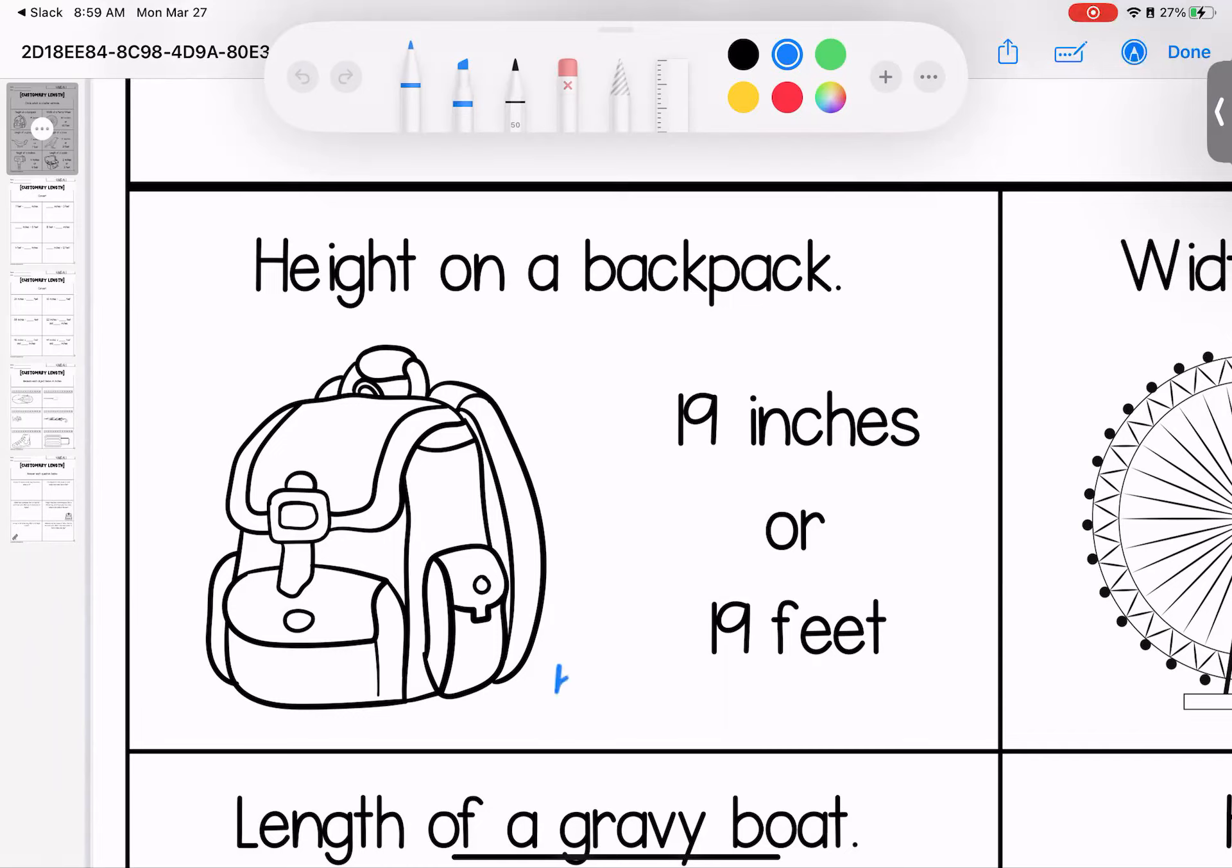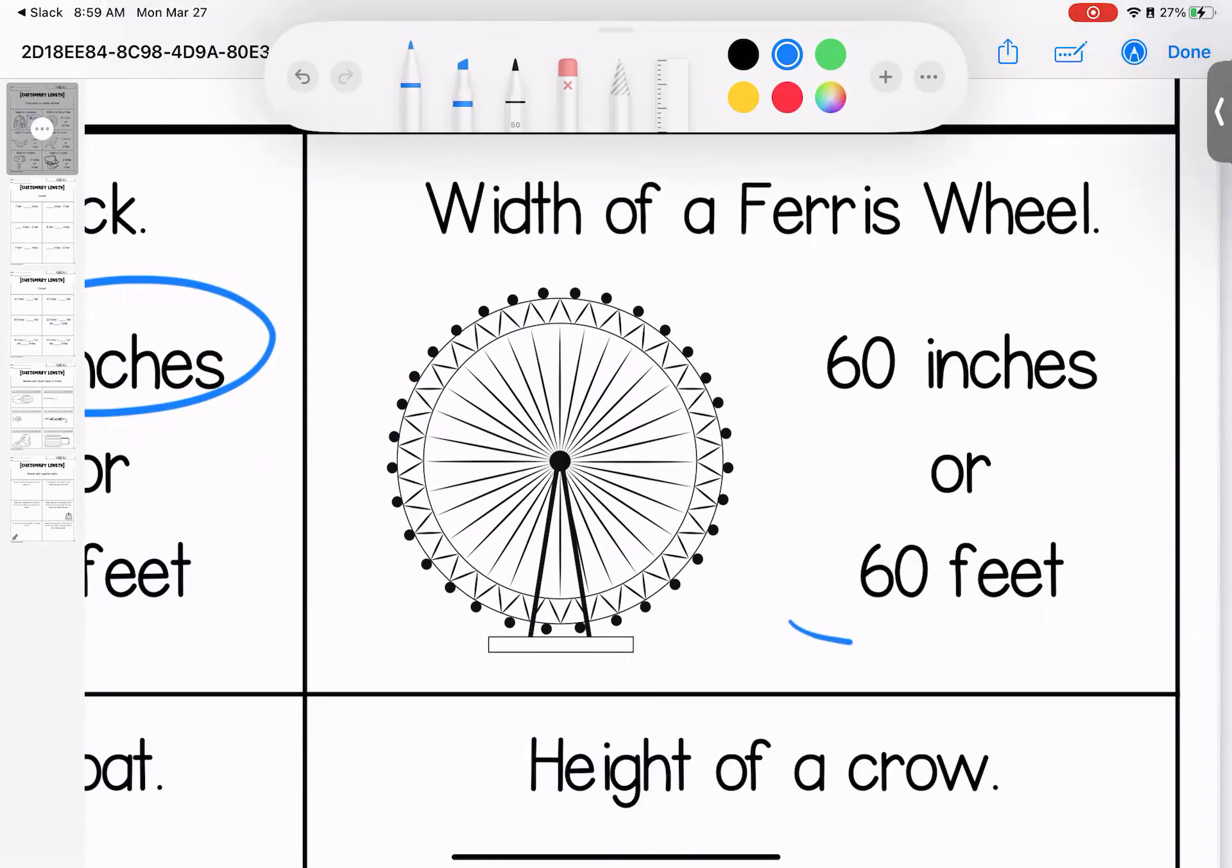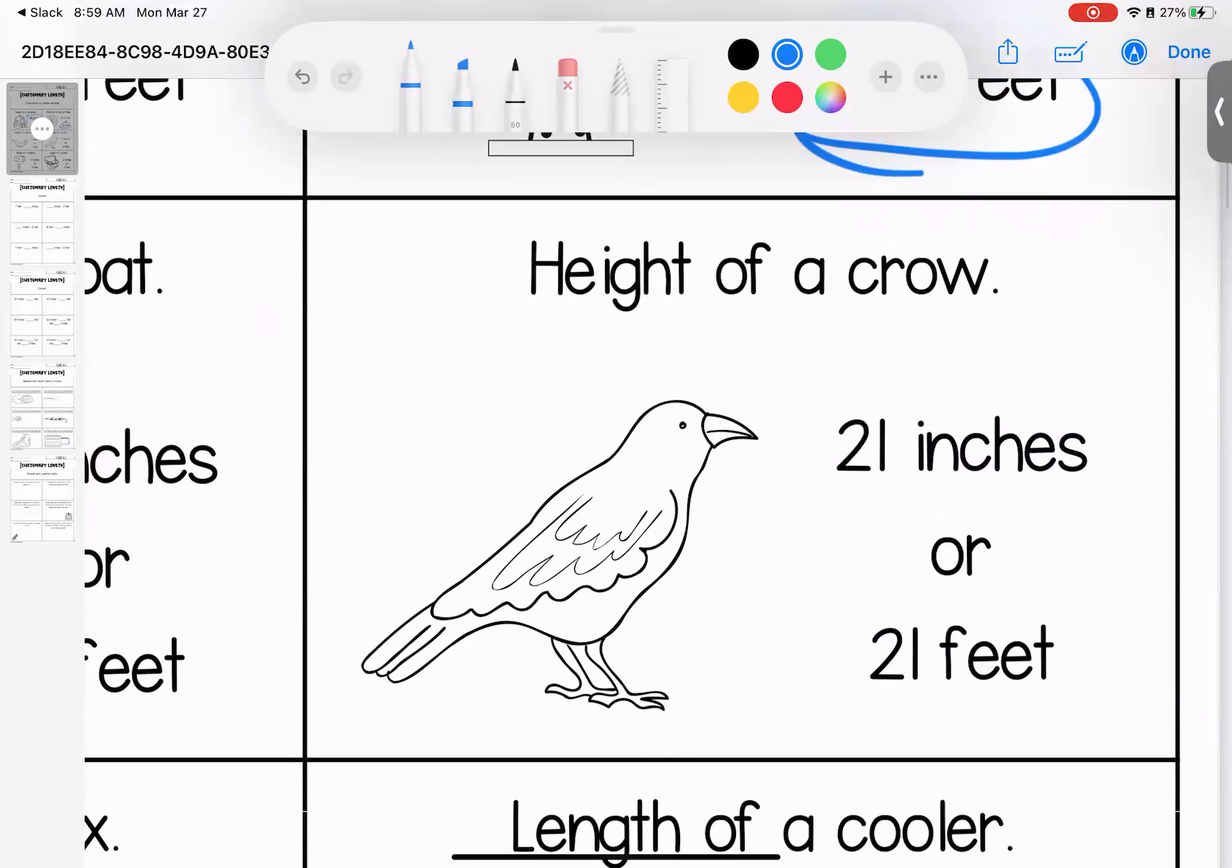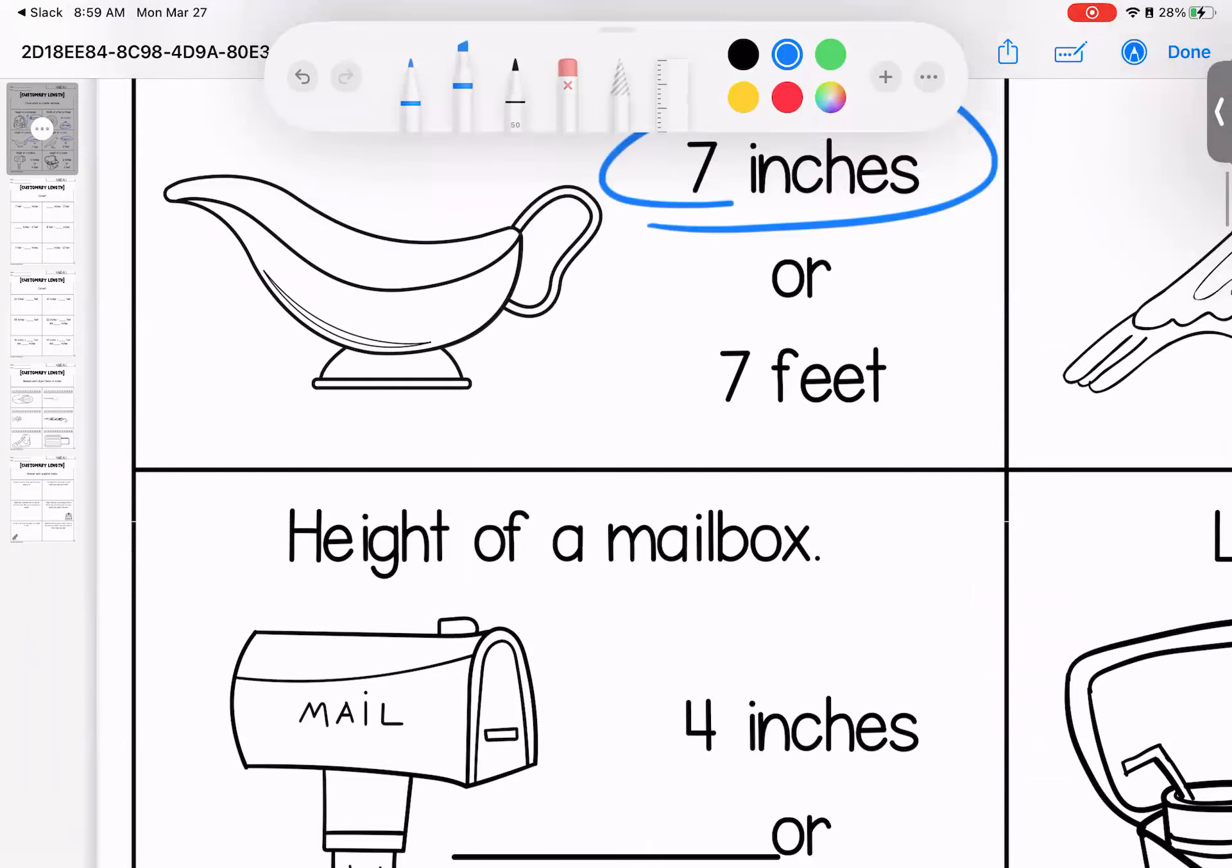With that in mind, the height of a backpack. Does it make more sense that it's 19 inches or 19 fingertips or that it's 19 books? 19 inches is going to make the most sense. Width of a Ferris wheel, 60 inches or 60 feet? 60 feet is the best answer, and that is actually a true fact. Height of a crow, 21 inches or 21 feet. Unless this is a crow, it's going to be 21 inches. The length of a gravy boat, this is something that would be on your dinner table that you could use at Thanksgiving. It's going to be 7 inches. We do not need 7 feet worth of gravy. That's probably taller than most of your grown-ups.